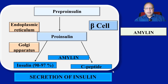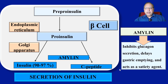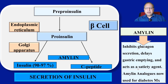Amylin inhibits glucagon secretion, delays gastric emptying, and acts as a satiety agent. Nowadays, amylin analogues are being used for diabetes management.